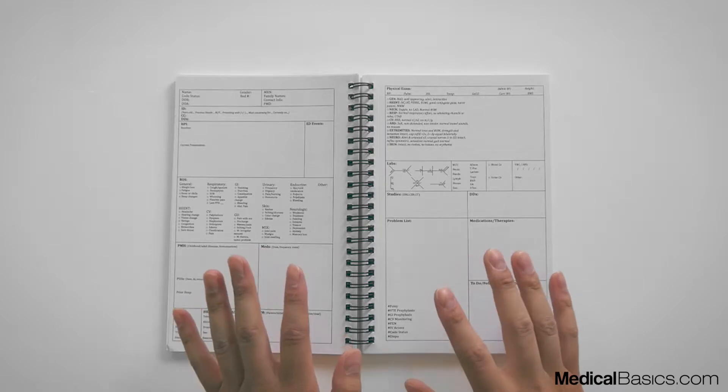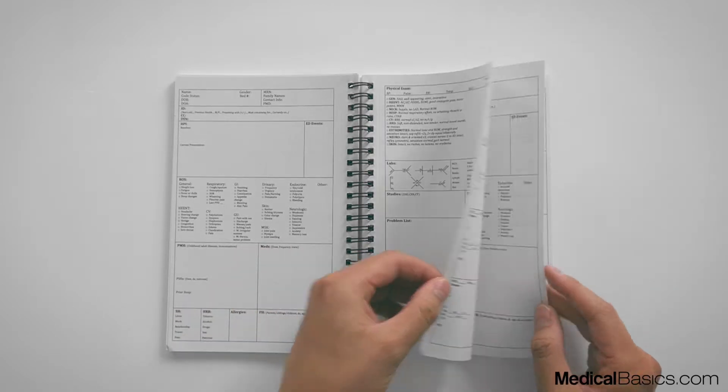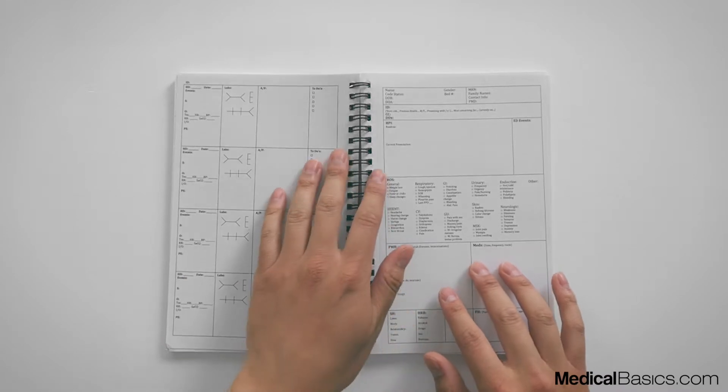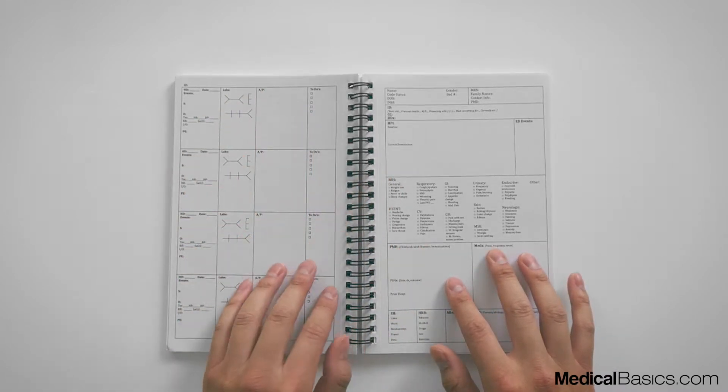But the progress notebook was for those scenarios where you're seeing the same patient for many different days. So you would see them for the first time, fill out the H&P, and on the next page you would be able to fill out their daily soap note.